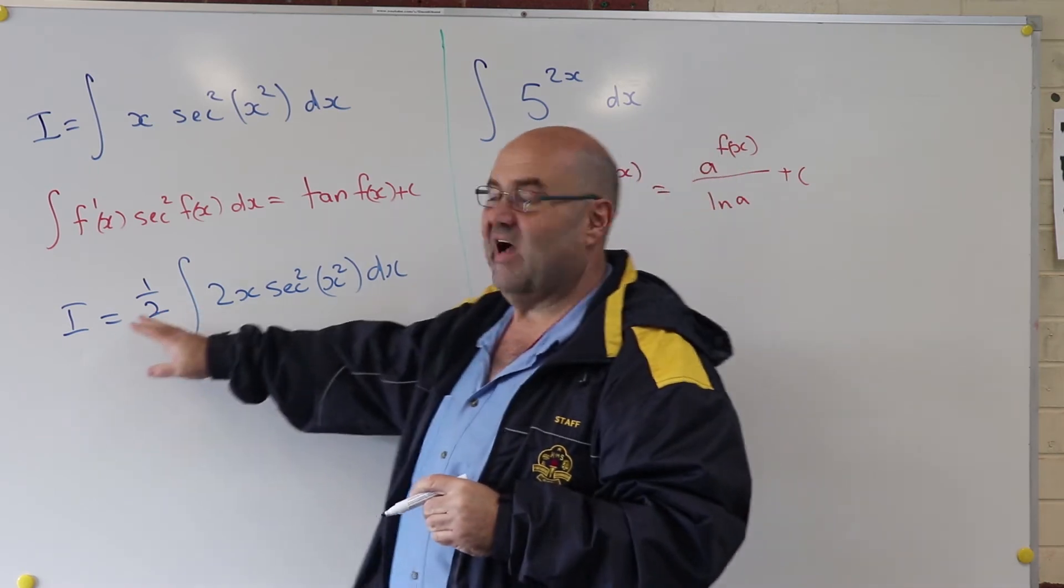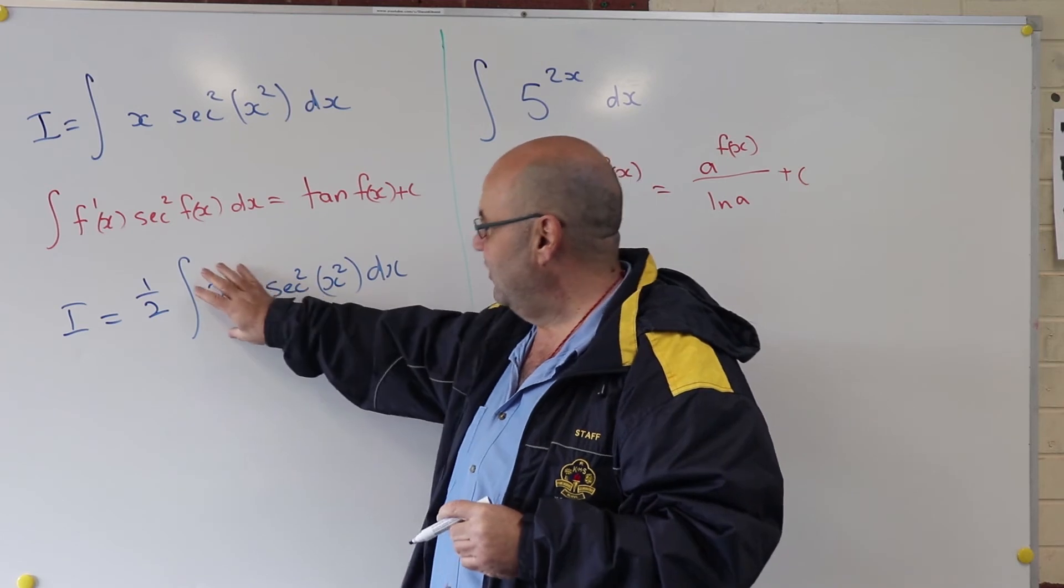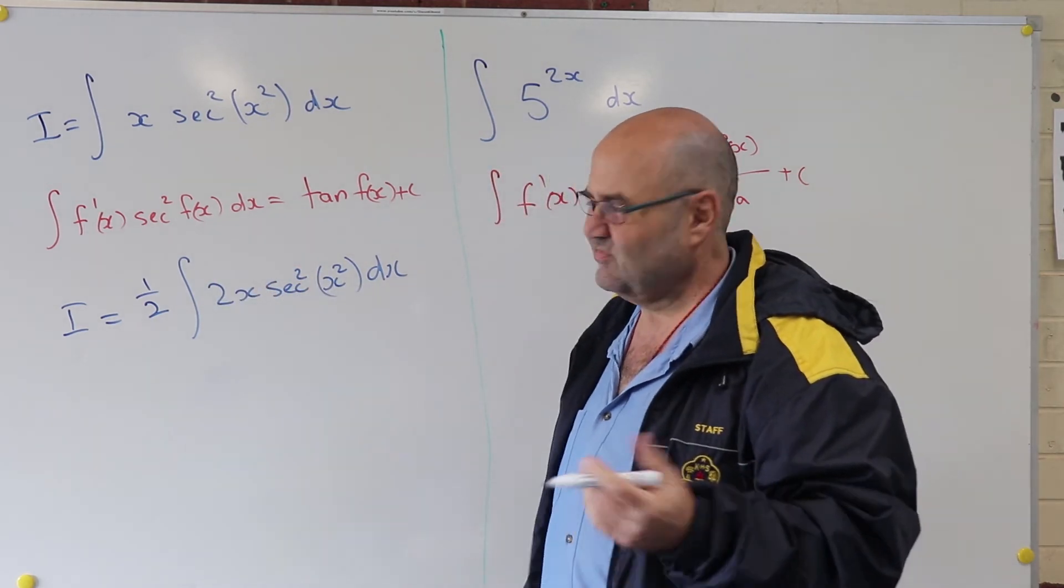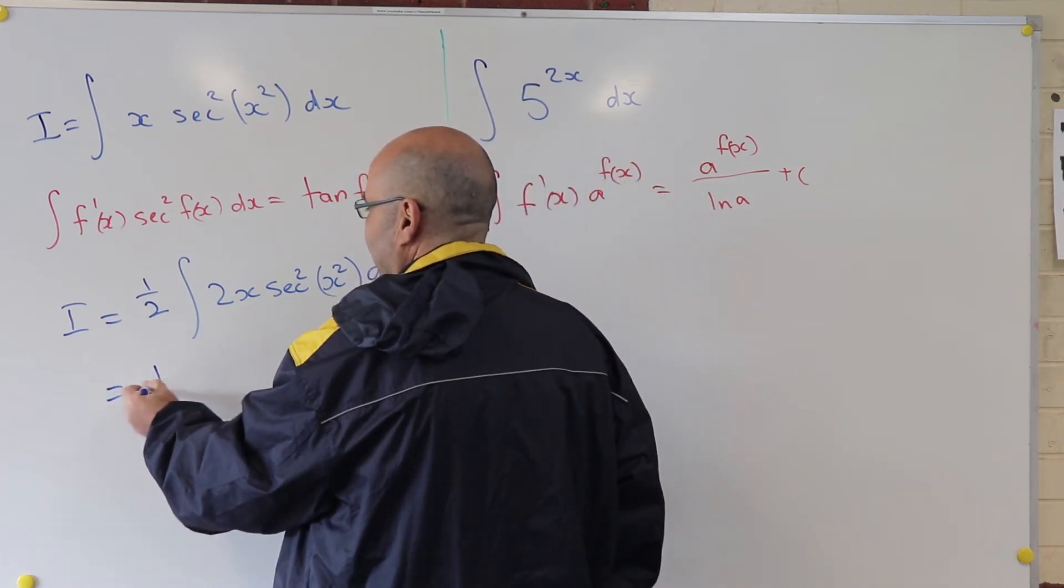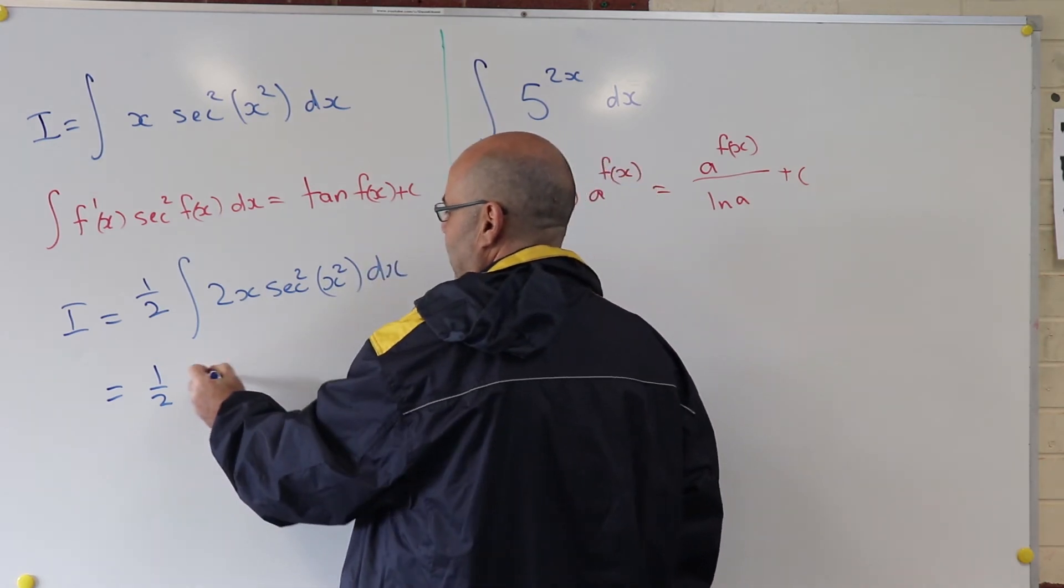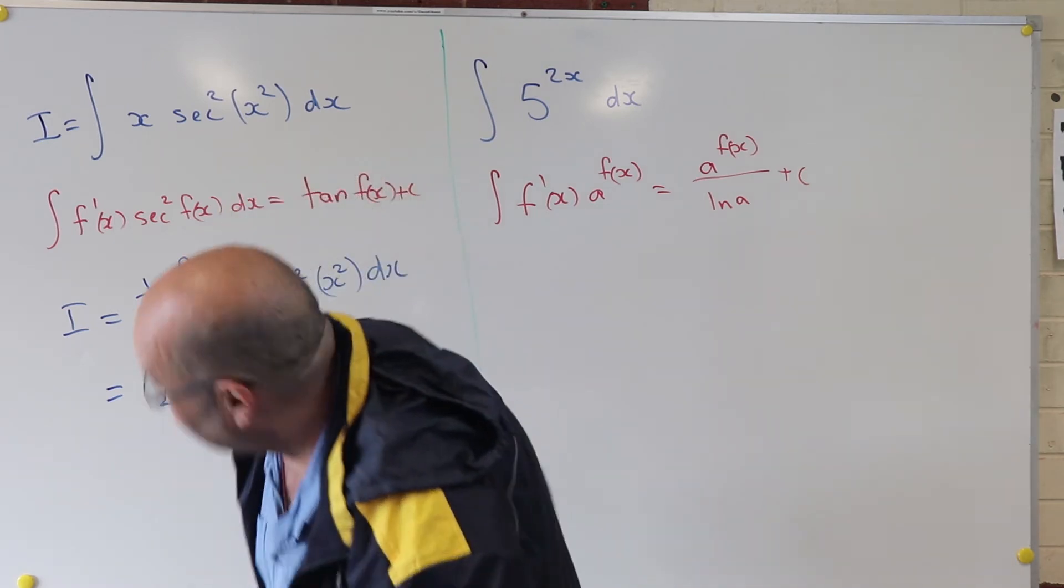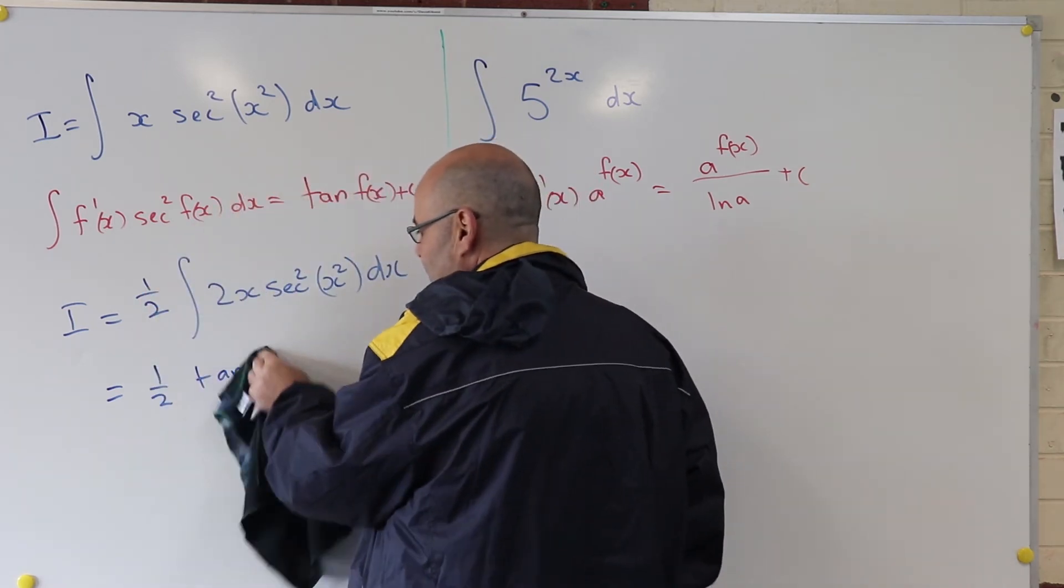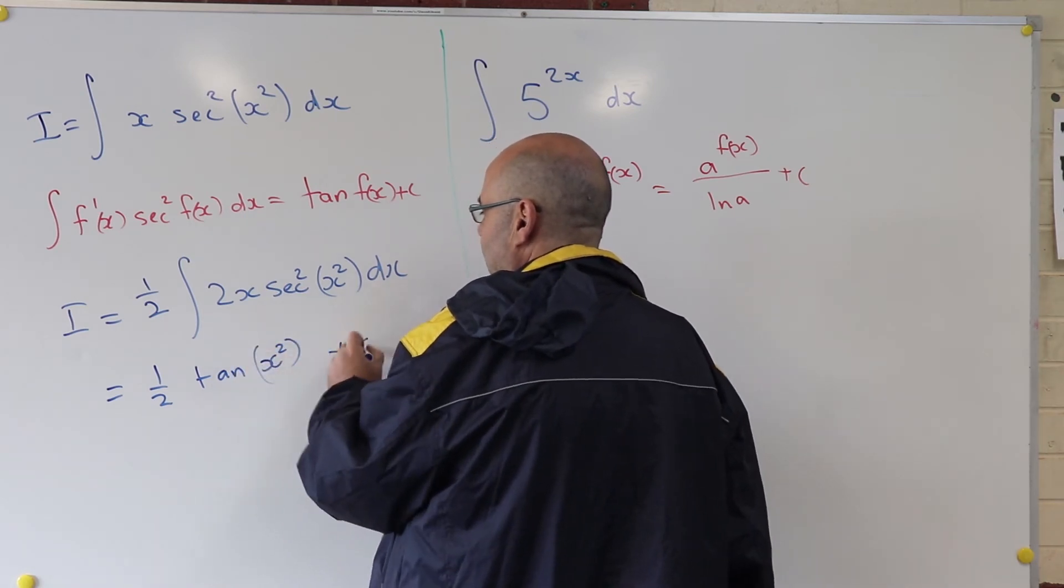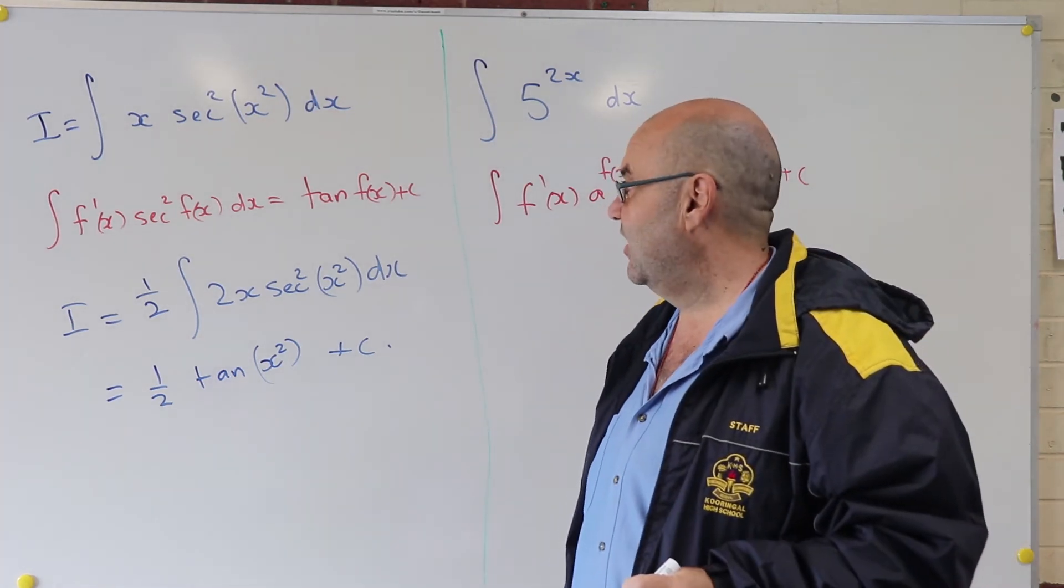So I have a half at the front and I stick a 2 in there. So this now looks like the derivative of that function times sec² of that function. Piece of cake now because the standard just tells me, there's my half. This is going to be tan of f(x). Tan of f(x) is of course x², my apologies. Tan(x²) + c. That's it. Piece of cake.